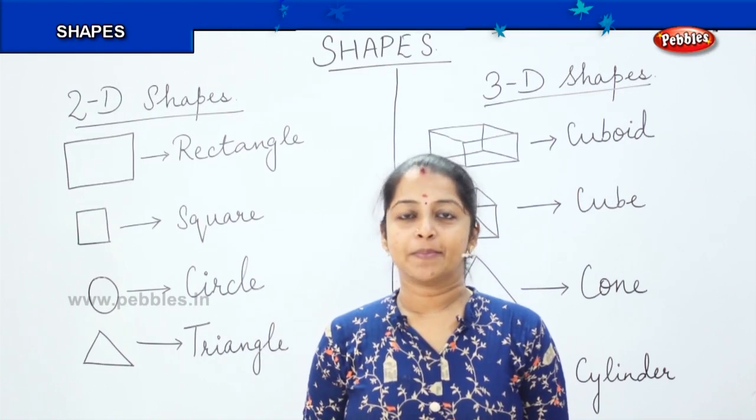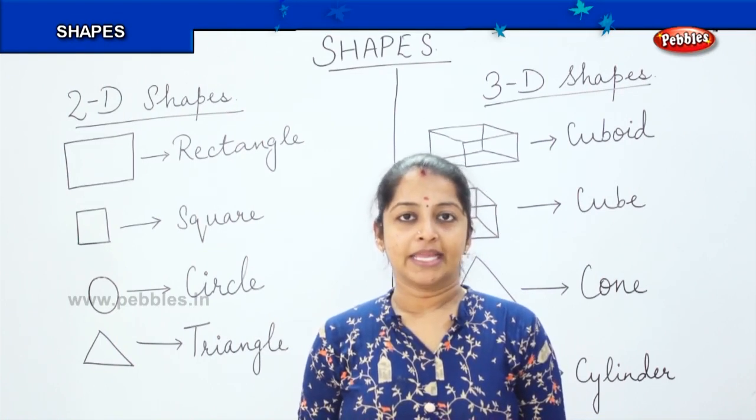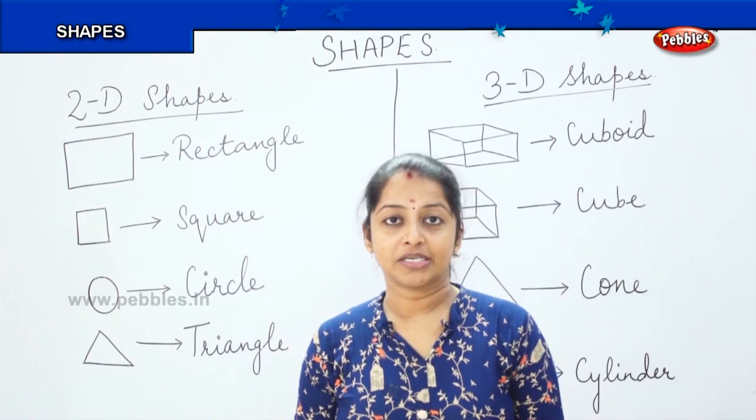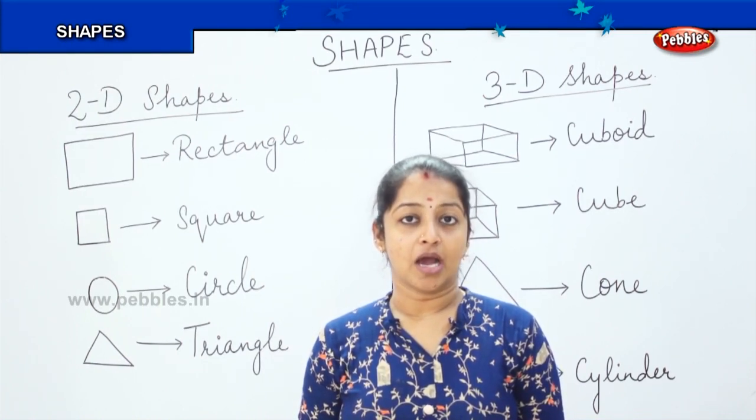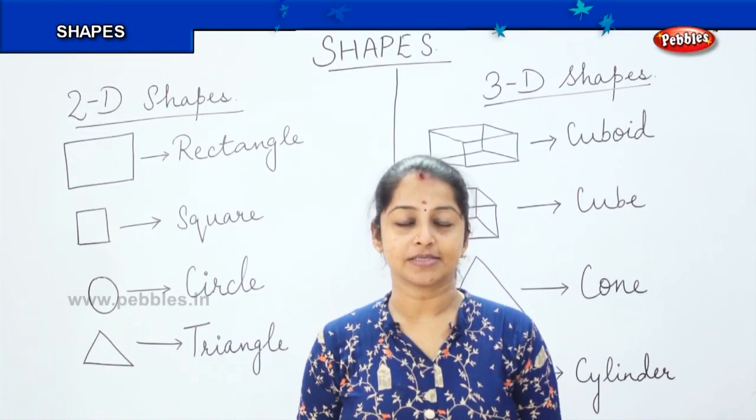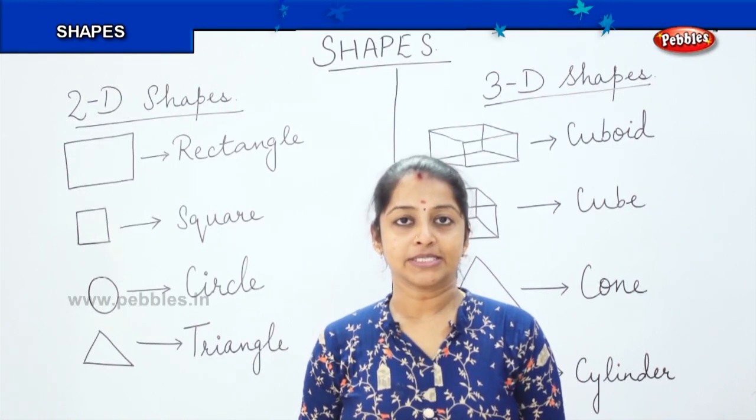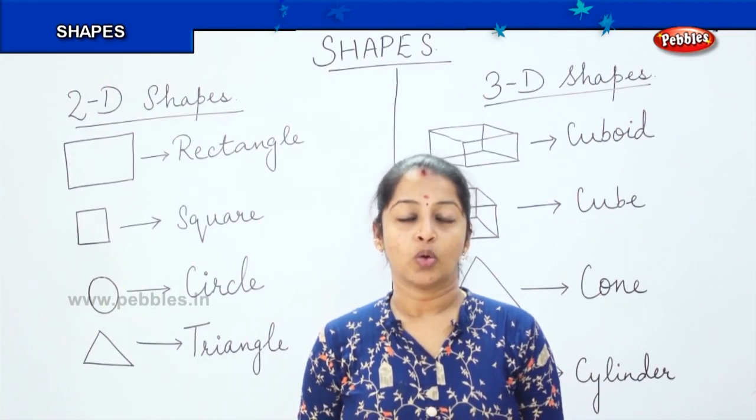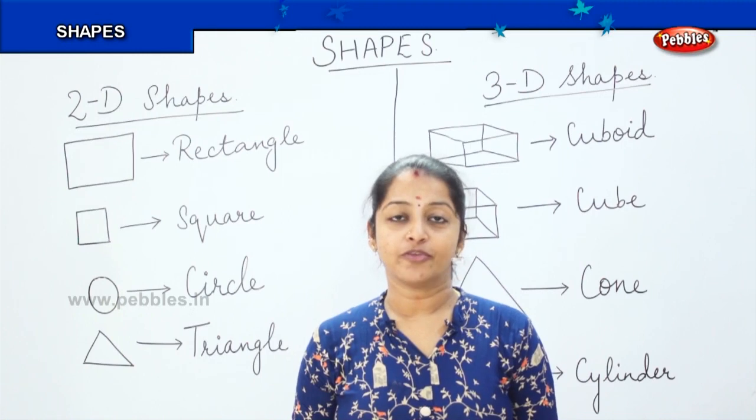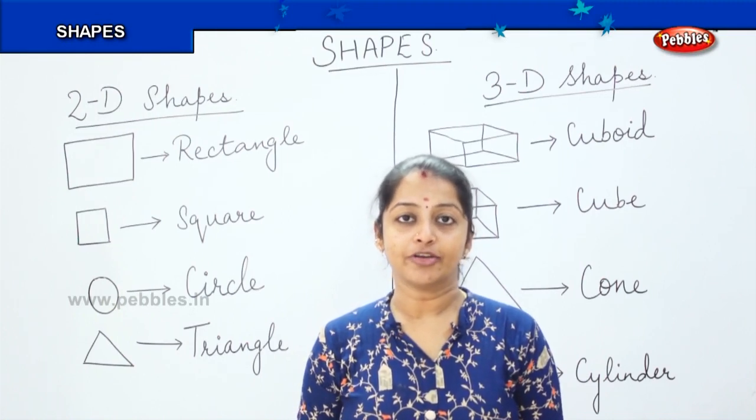Yes. Every shape cannot be the same, right? Can you see a door in a triangle shape? Will it look nice? Or can you see a house in a circle shape? Will it look nice? No, because a house needs to be in a rectangle and a square form. Only then it is possible for us to stay inside comfortably, right?